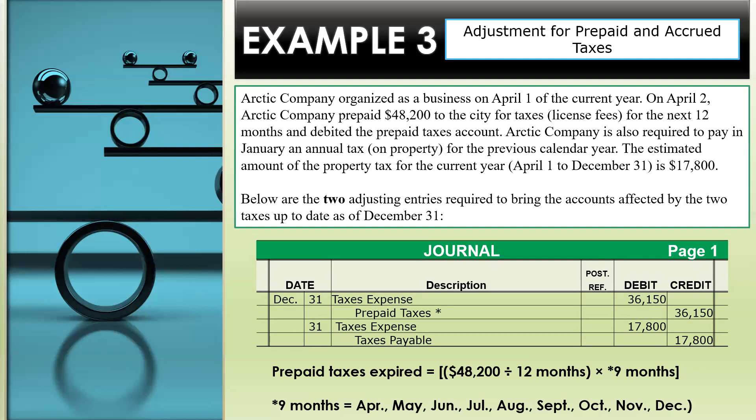The first adjusting entry: the date is December 31. The debit is to taxes expense in the amount of $36,150. The credit is prepaid taxes, $36,150. Where did I get this? From the transaction, we've got $48,200. We divide it by the 12 months, get that amount, and then multiply it by nine months. Why nine months? Because we've got April, May, June, July, August, September, October, November, December — that's nine months. So $48,200 divided by 12 months, times nine months, gives us $36,150.